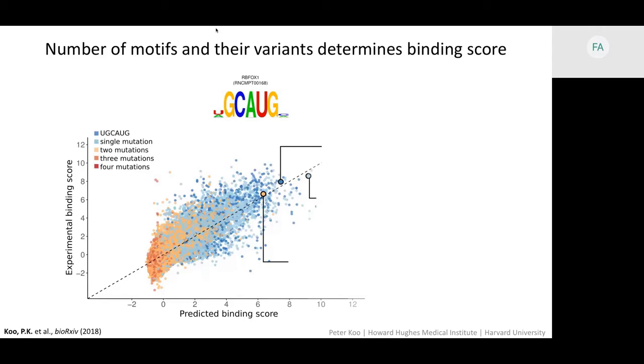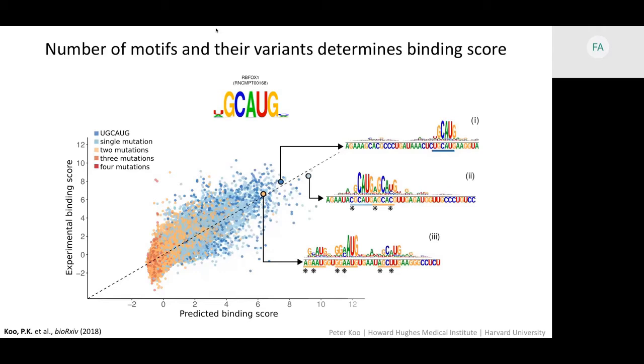So we can employ saliency analysis to try to understand what's going on underneath the hood. And this shows you that our model learns that a single intact motif at the top here is sufficient for a high binding score. And these other two sequences with mismatches have more instances of their suboptimal motifs, which collectively increases the overall binding score for that given sequence.